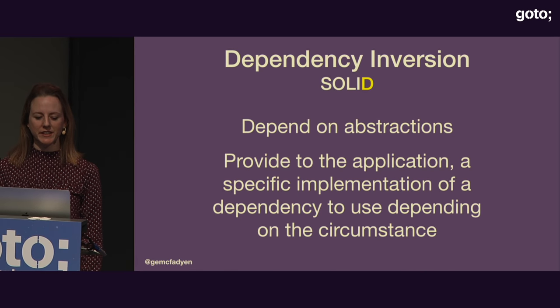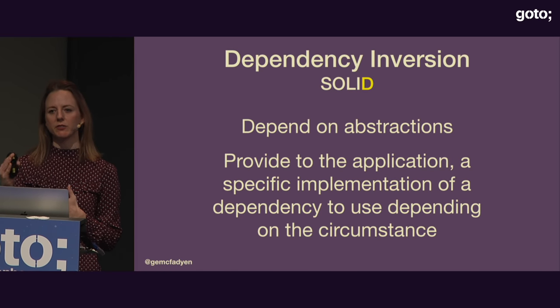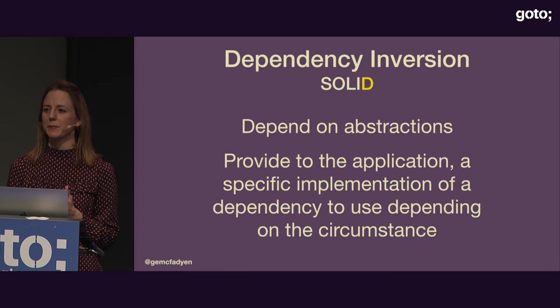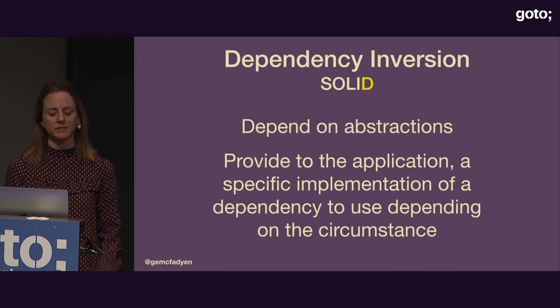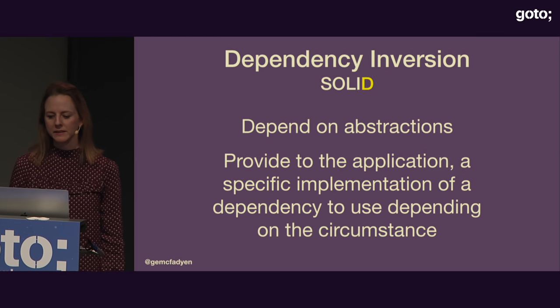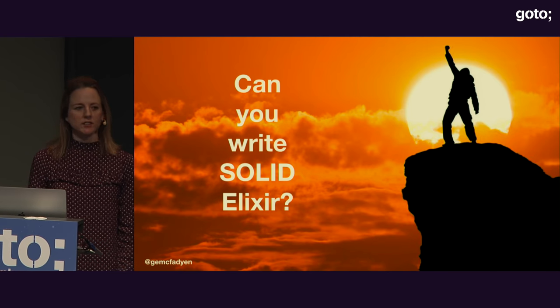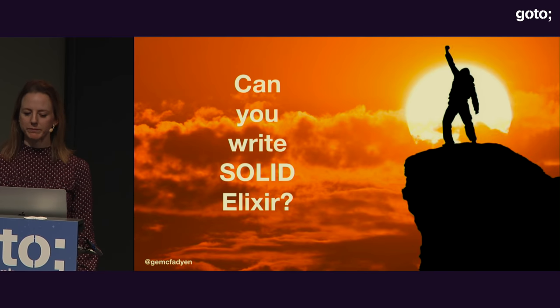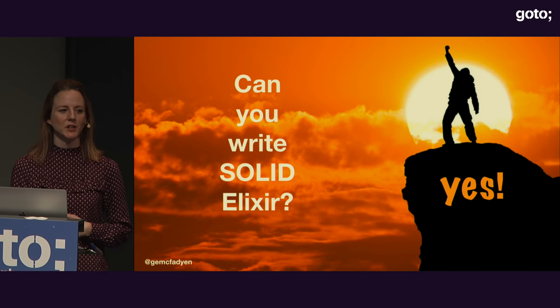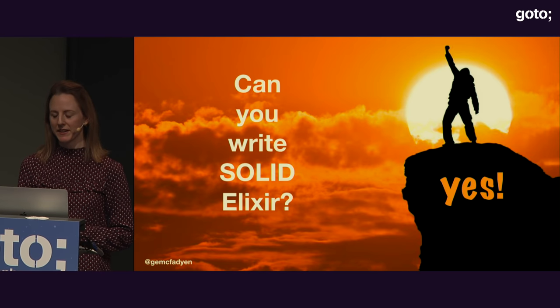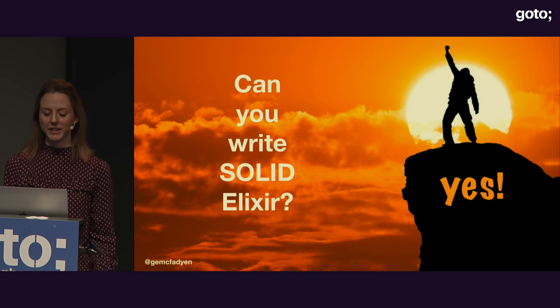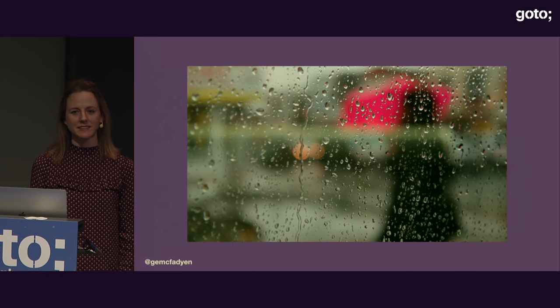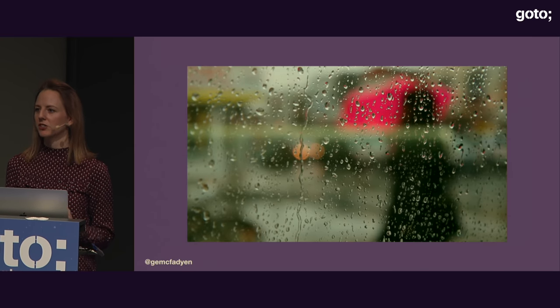In terms of Dependency Inversion, by separating our high-level modules from the detail of our low-level modules, we've been able to swap in and out different implementations, which has provided greater flexibility for testing. So can you write SOLID Elixir? Well, we just did. We've applied every single SOLID principle to our Elixir codebase, and it's all still running fine. The real question is: is this idiomatic Elixir, or have we just ended up with a functional codebase that resembles Java? Are these rules the right rules to be applying to our functional landscape?